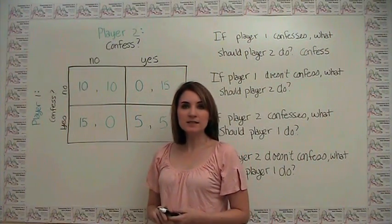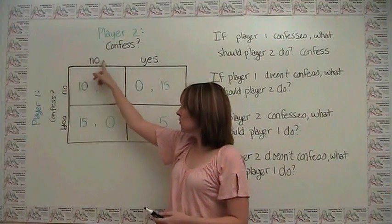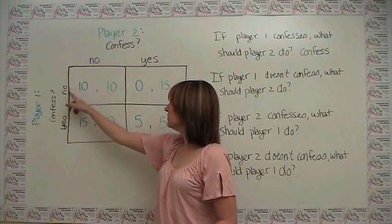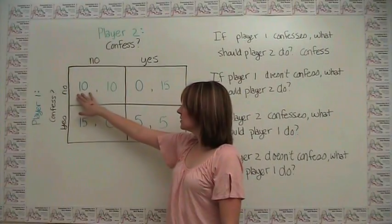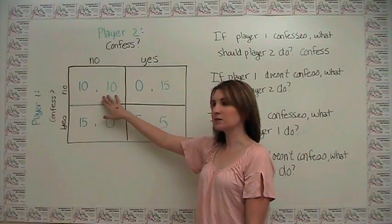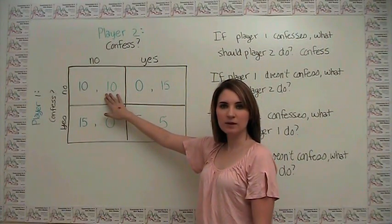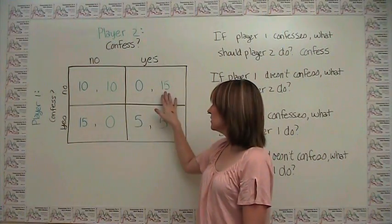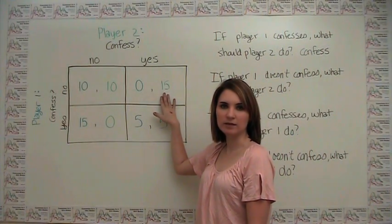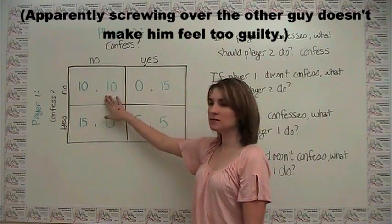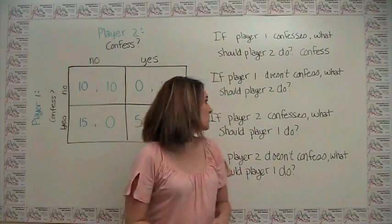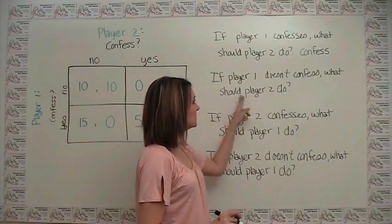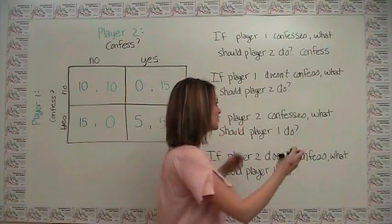Now what about if player 1 doesn't confess? Well, if player 1 doesn't confess, we're up here. Say, well, player 2 again has two options. He can get 10 by keeping quiet, or he can get 15 by ratting out his buddy. So 15 is better than 10, so if player 1 doesn't confess, player 2 still should confess.